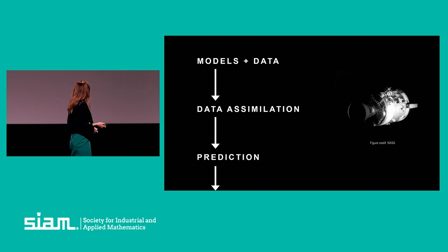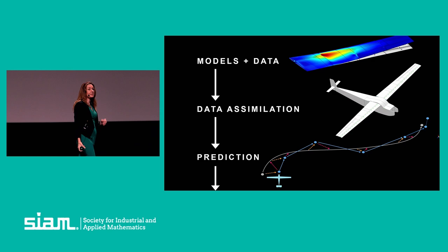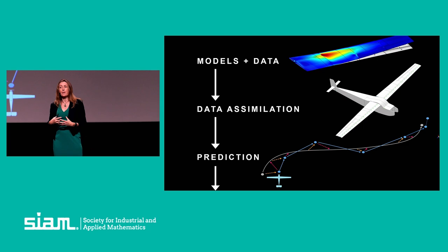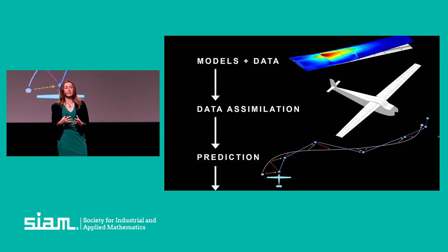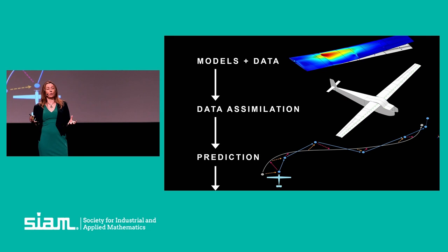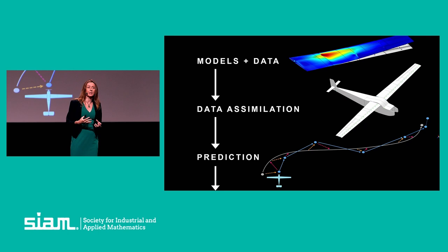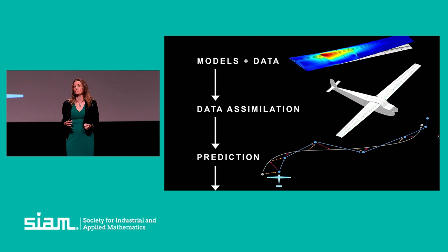Now let's come back to 2023. Today, that story of models and data and data assimilation has been revolutionizing the way we design and operate engineering systems. The story is similar to the Apollo 13 story, but it also has some differences. We're living in the era of big data — we have more data now than ever before about our engineering systems, particularly as sensors have become cheaper, more lightweight, more energy efficient, and generally more powerful.